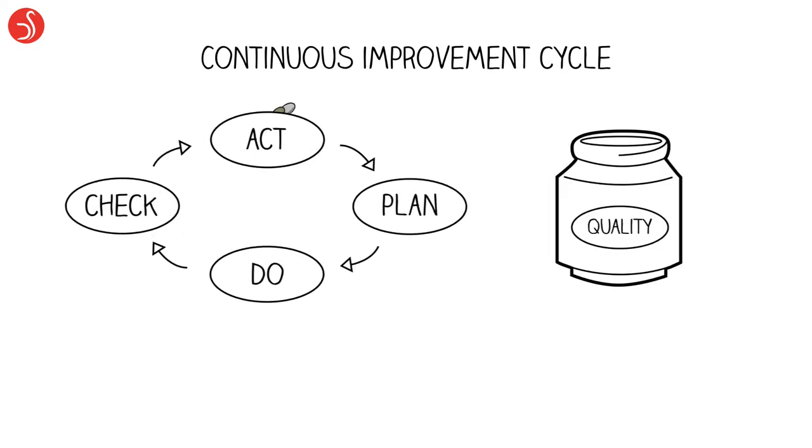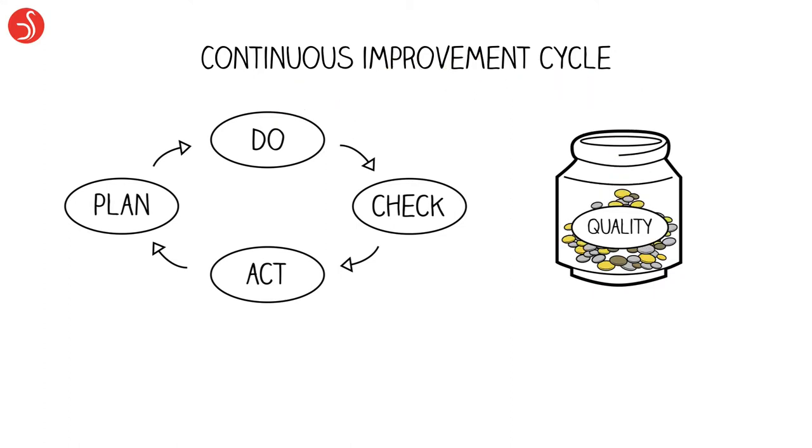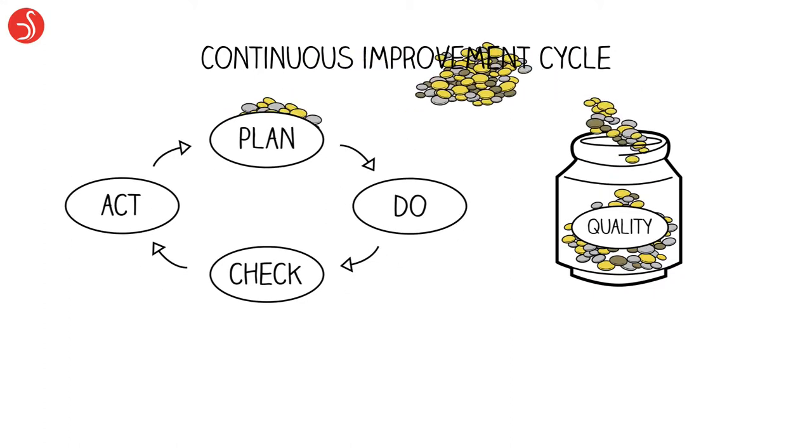John's plan focused on improving quality first. They learned as a team, regardless of status, and they started small. As they learned by doing, things got better. They reinvested early savings into going after tougher problems. They kept learning, and they kept improving.